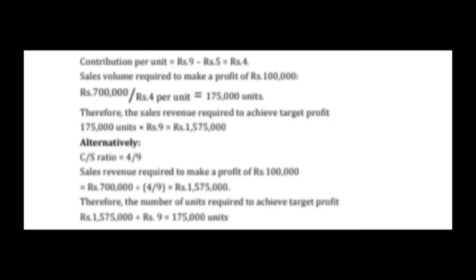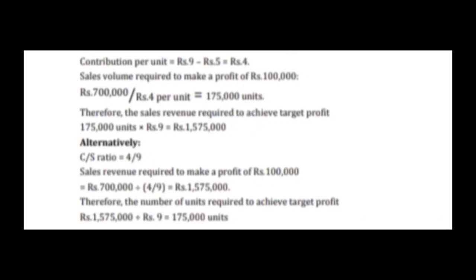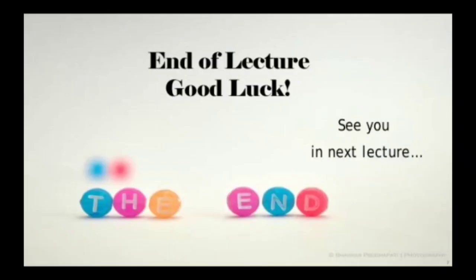Multiplying the 175,000 units by the selling price per unit gives the targeted profit sales revenue. Alternatively, you can solve using the contribution sales ratio: CS ratio = contribution ÷ sales. Then sales = 700,000 ÷ CS ratio, giving the same answer. You can then divide the sales by selling price per unit to get the number of units required to earn the profit.